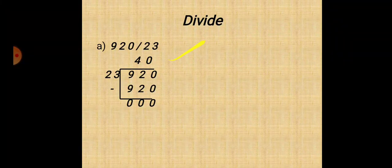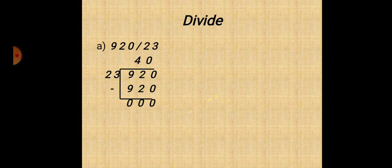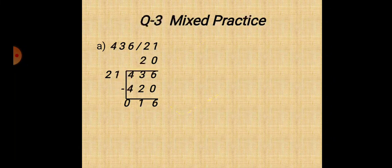So our quotient will be 40 and remainder will be 0. Rest of all sums, you have to do it by yourself in fair book. Question 3: